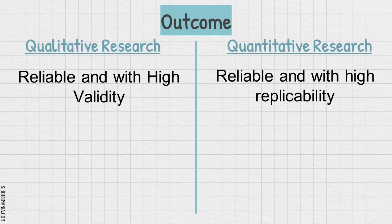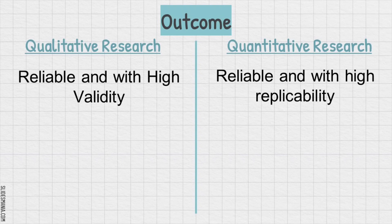Lastly, outcome. In qualitative research, we are reliable but with high validity. Whereas in quantitative research, we are also reliable but with high replicability. Qualitative research has high validity because data is collected and interpreted in a personal and more natural manner. Quantitative research, on the other hand, allows for replication or parallel studies — studies can be conducted in different settings or focused on different variables of the same research problem.